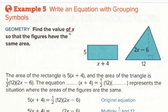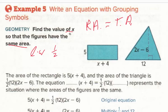It says find the value of x so that the figures have the same area. So the general equation is: rectangle area should equal triangle area. You'll need prior knowledge of how to find the area of a rectangle and a triangle. A rectangle is length times width, and a triangle is one-half times base times height.